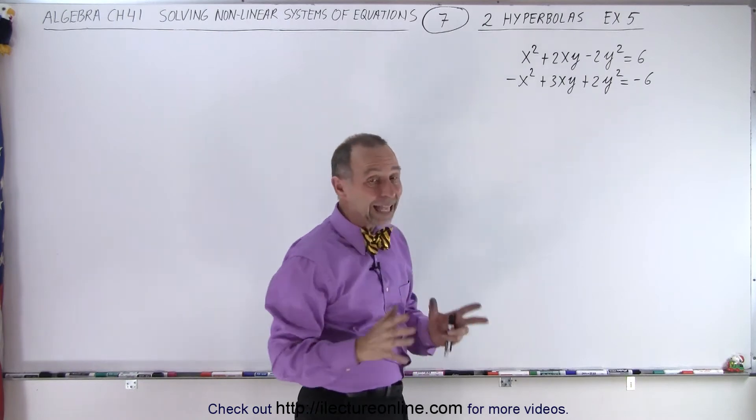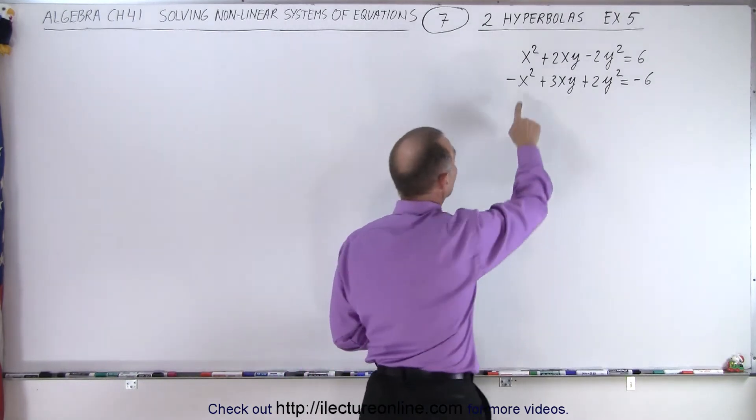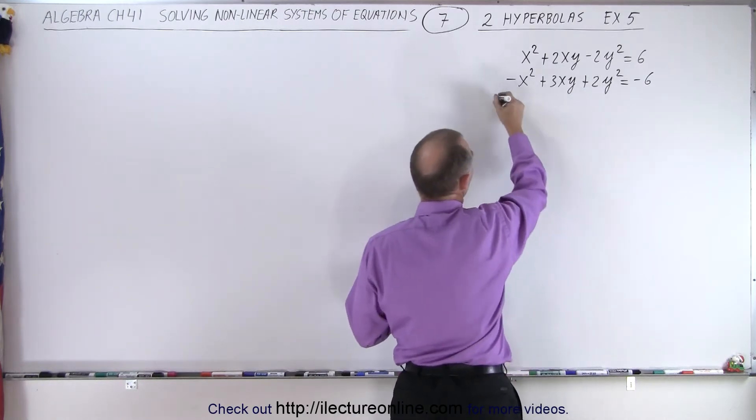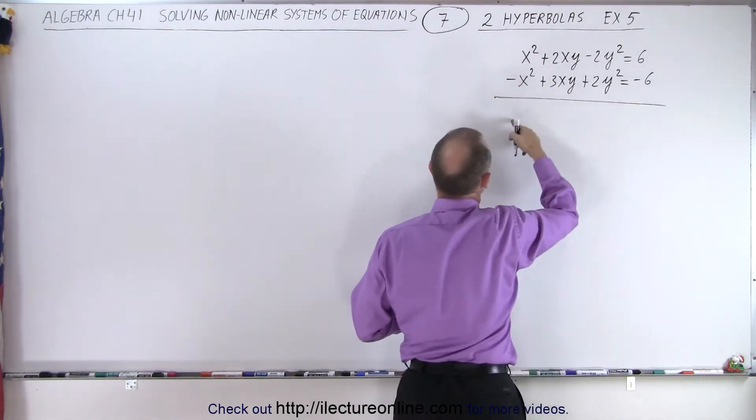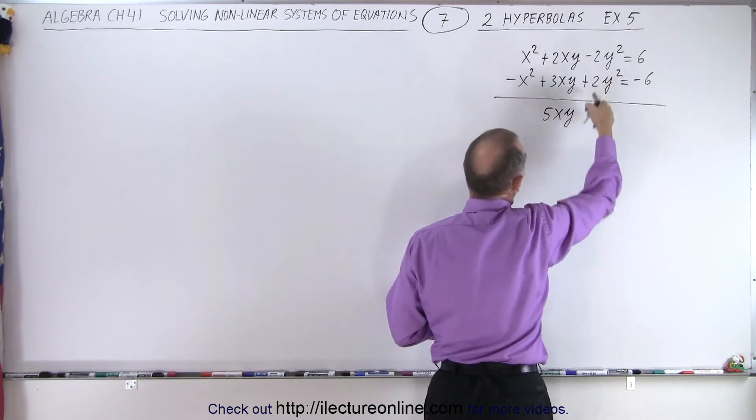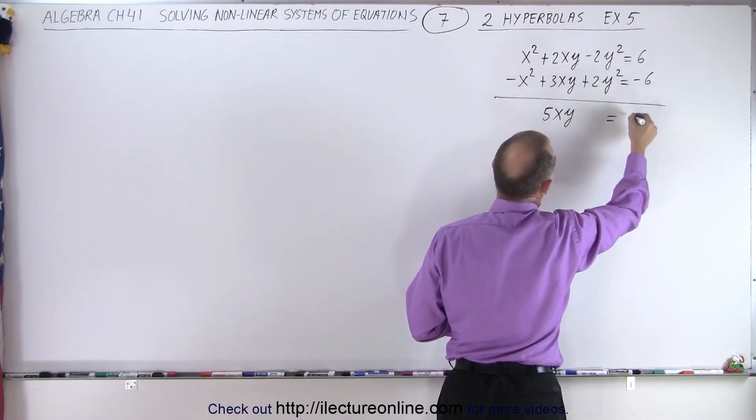But notice if we add the two equations, we get rid of the x squared and we get rid of the 2y squared. So let's go ahead and do that. We're going to add the two equations together. Here we get 0. Here we get 5xy. Here we get 0 is equal to 0.